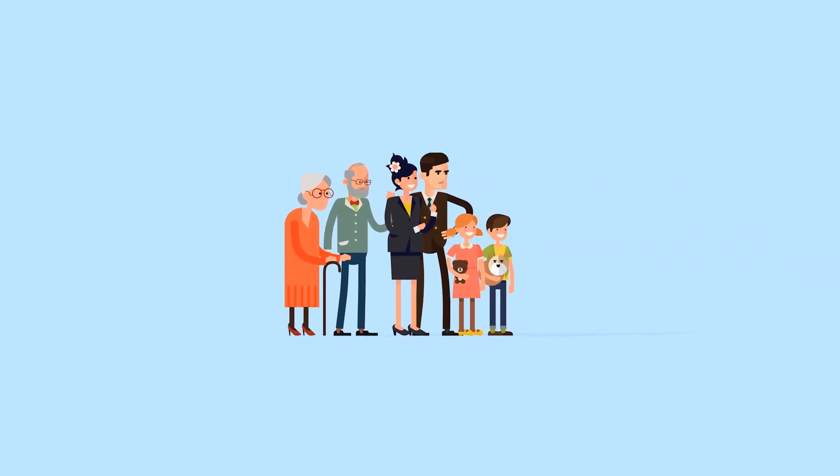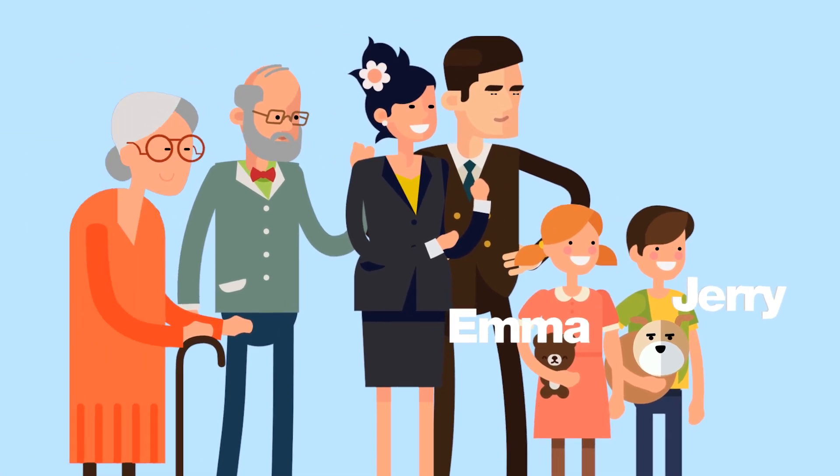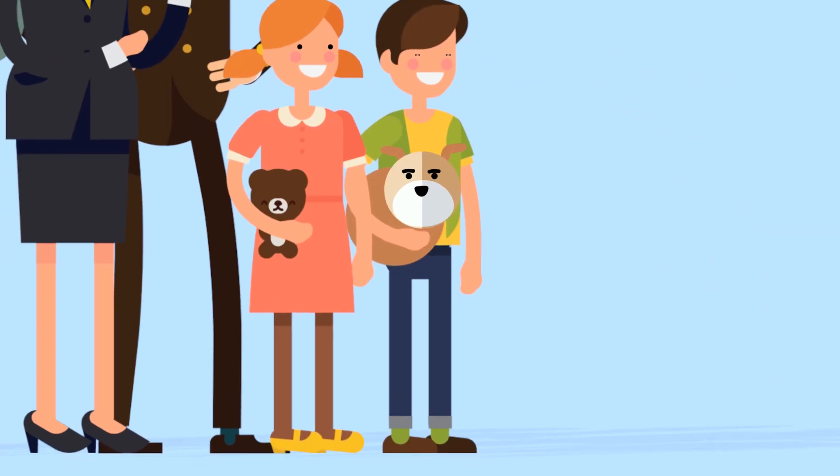This is the Cole family. Robert, Susan, the children Emma and Jerry, Grandma Maggie, Grandpa Bob, and the dog Buddy.